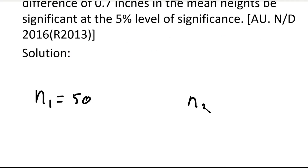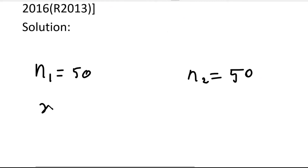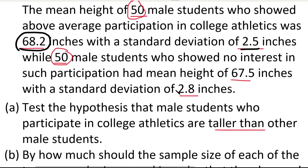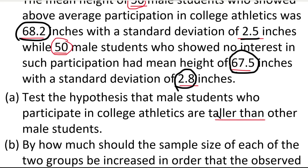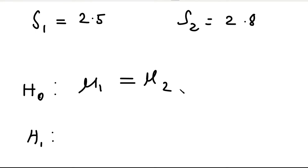So n1 = n2 = 50. x1-bar = 68.2, s1 = 2.5, x2-bar = 67.5, s2 = 2.8. Now we write the null hypothesis H0 and alternative hypothesis H1. The null hypothesis is H0: mu1 = mu2, meaning the two population means are equal.